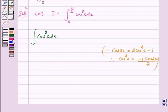So this is equal to 1/2 times the integral of (1 + cos2x) dx. And this is equal to 1/2 times (x + sin2x/2).